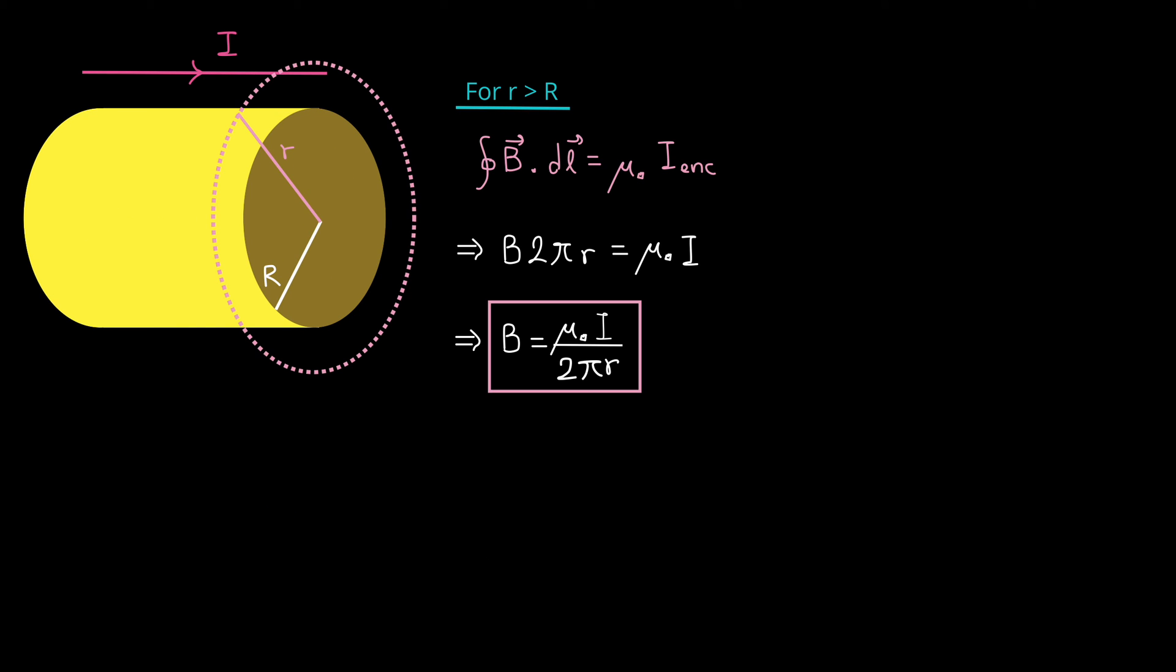Now let's find the magnetic field outside of the wire, at a distance, lowercase r, from the center, this time lowercase r is greater than capital R. We apply Ampere's law again. The line integral of magnetic field is equal to mu zero times i enclosed.